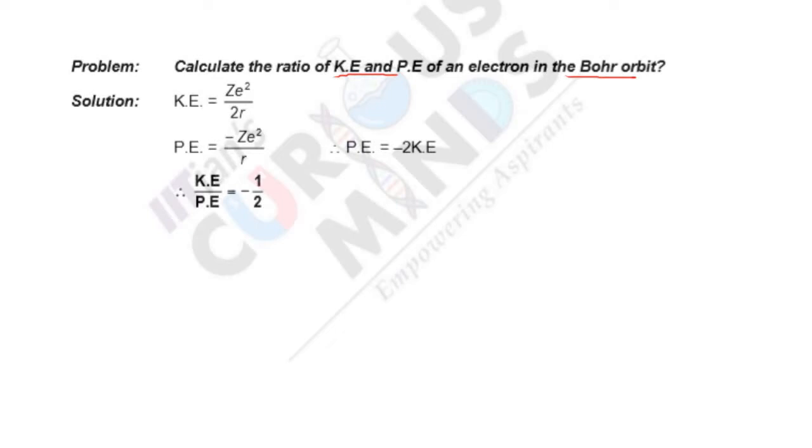This is a pretty direct question if you know the formula. You know that kinetic energy is Z E squared by 2R and potential energy is minus Z E squared by R. So you can clearly see potential energy is minus 2 times kinetic energy. So the ratio is minus 1 by 2.